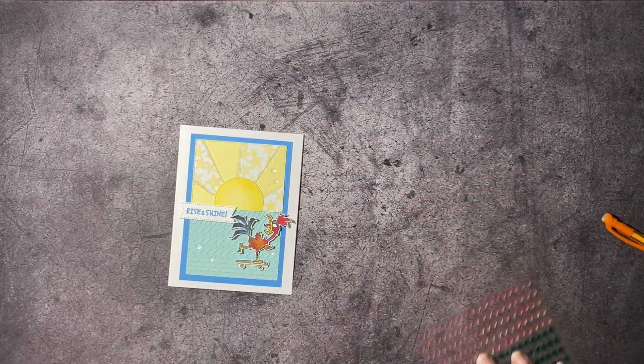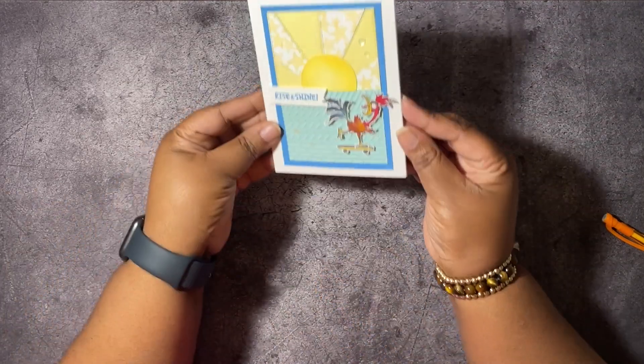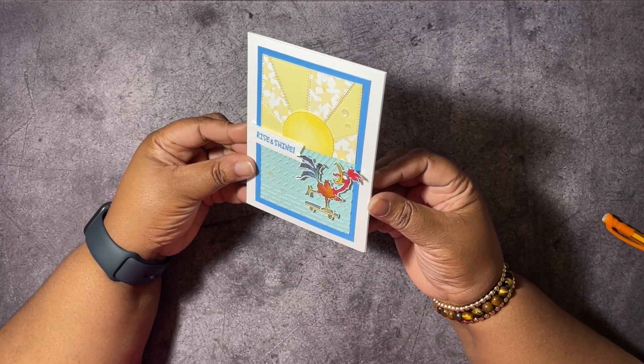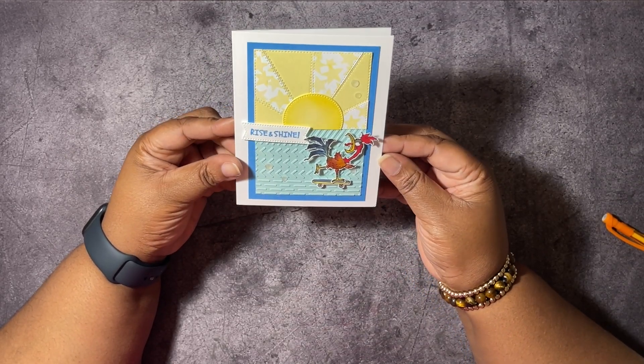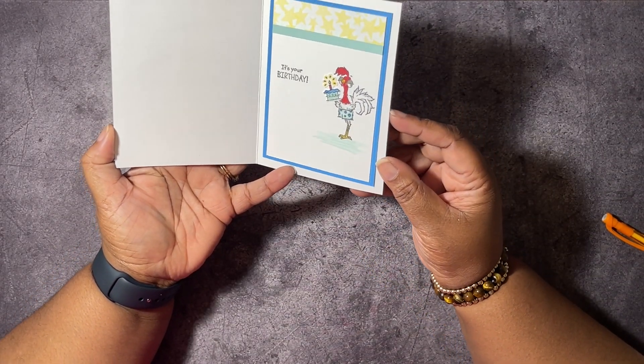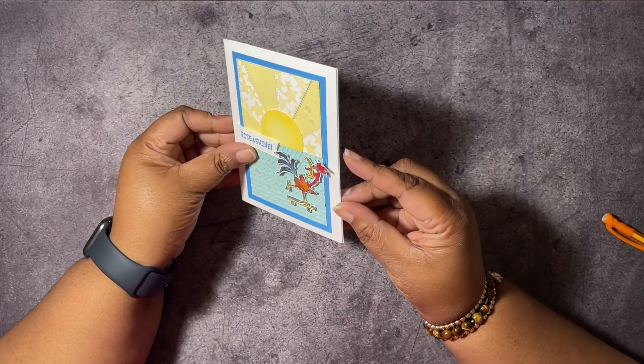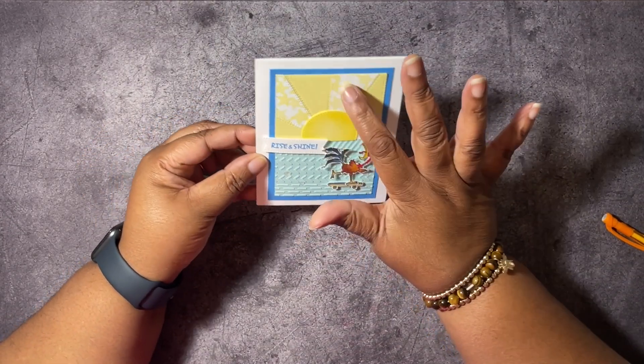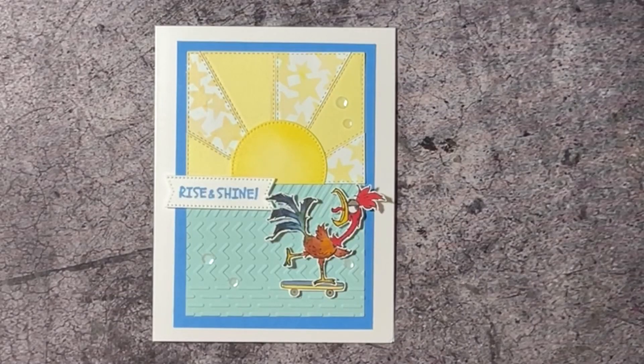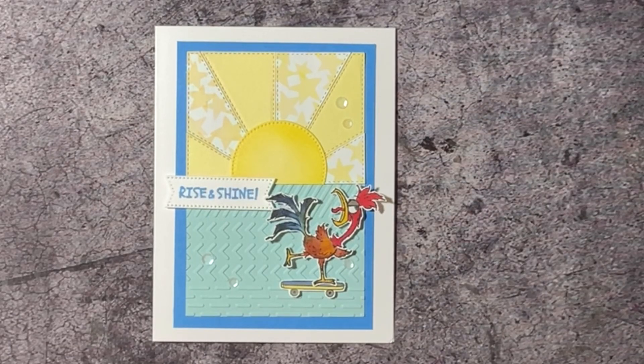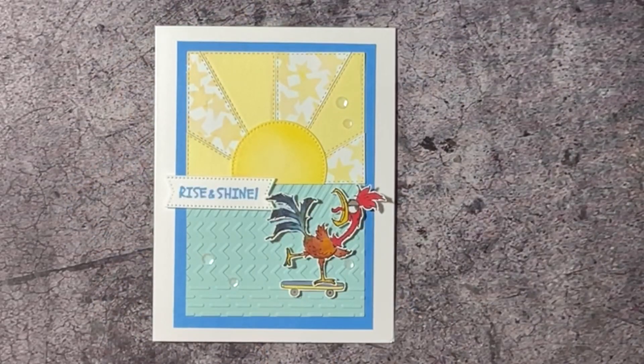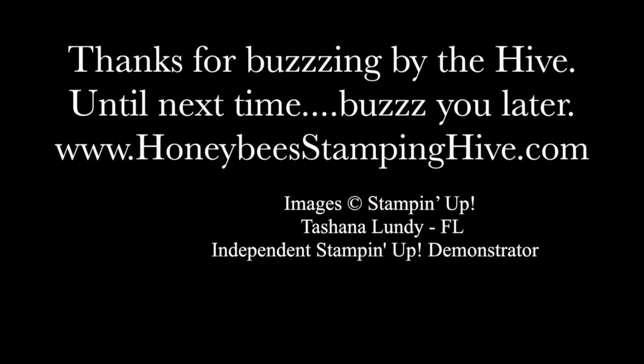Okay, you guys. Isn't that cute? I love this. Because I wanted the card to stand out on its own. That's why I wanted to use some simple embellishment. But I think that is super cute. Rise and shine. It's your birthday. Isn't that cute? I love this. Oh, my goodness. And this die is just the greatest. Okay, you guys. That's it. That's all. Don't forget to leave a comment, like, share, and subscribe. And as always, I want to thank you for buzzing by the hive today. Until next time. Buzz you later. Bye.